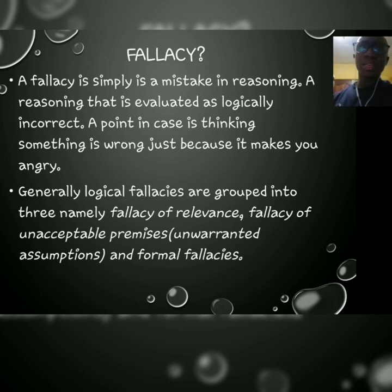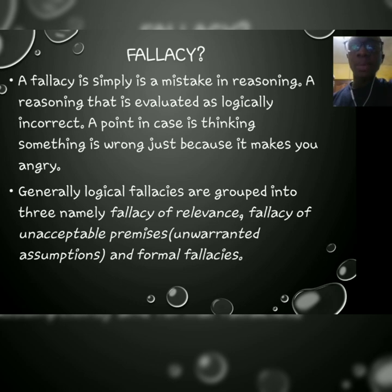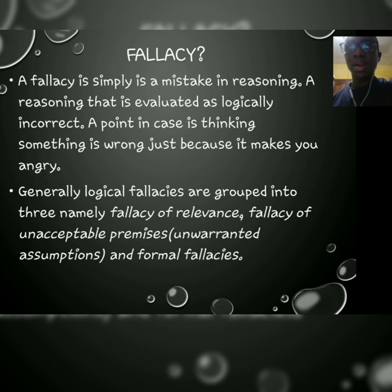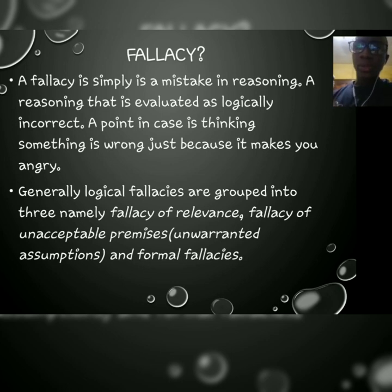A fallacy is simply a mistake in reasoning. The moment we realize there are some inconsistencies in the way we reason, there is a fallacy. One example: we believe something is wrong just because it makes us angry. For example, a friend tells you that you have bad breath and you get angry, but that doesn't mean what the person said is wrong. Generally, fallacies are grouped into three forms: fallacies of relevance, fallacies of unacceptable premises, and formal fallacies.